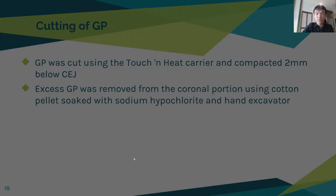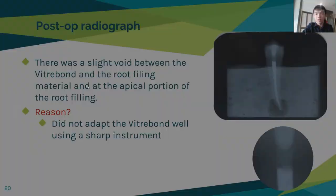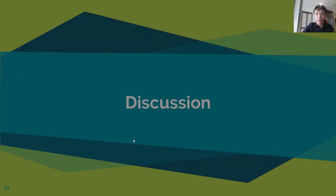The GP was parted 2 mm below the CEJ. Restoration with composite was completed. On the post-op radiograph, there was a slight void at the coronal area, possibly because I didn't adapt the composite well using a sharp instrument.